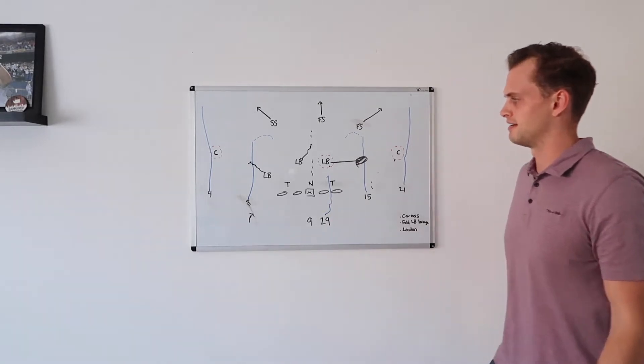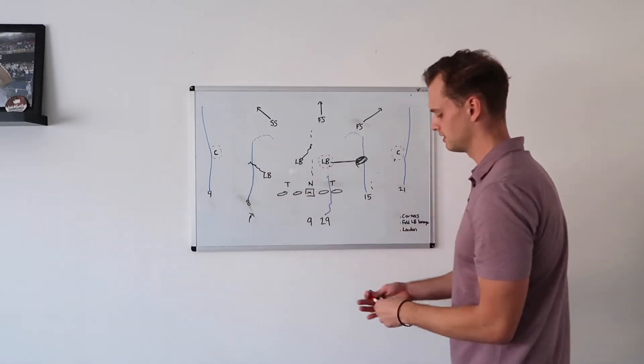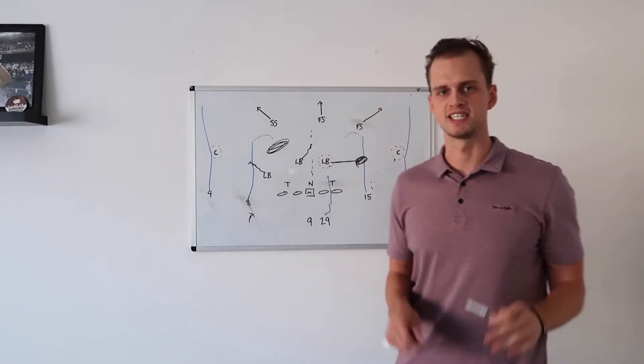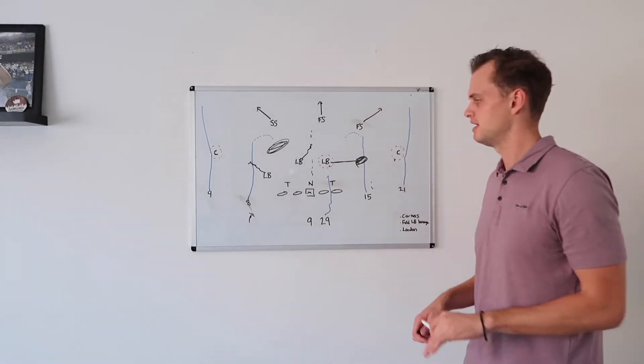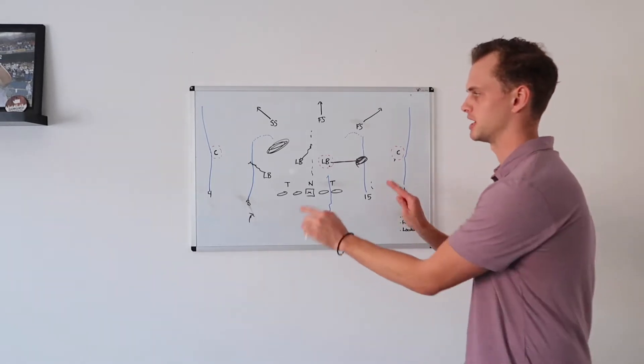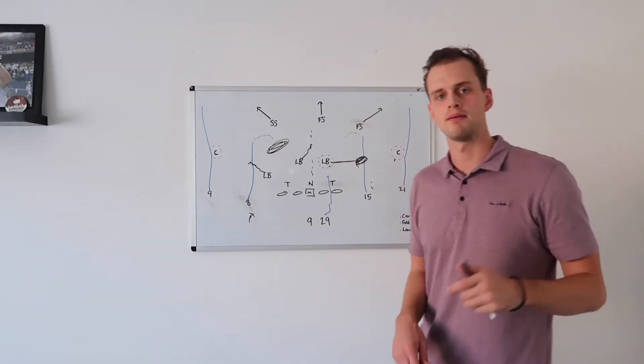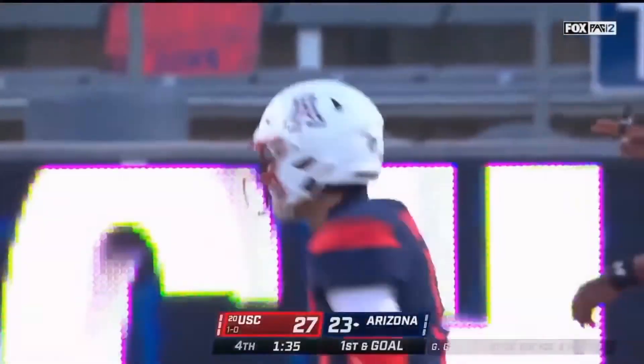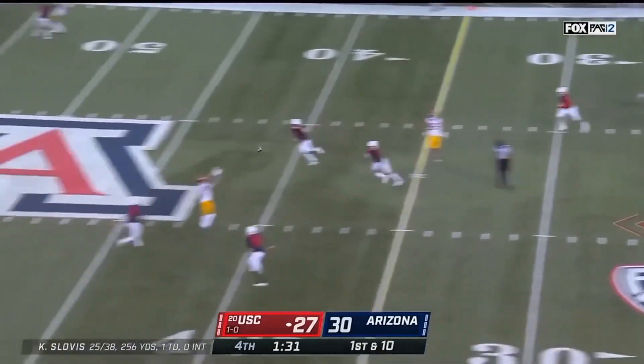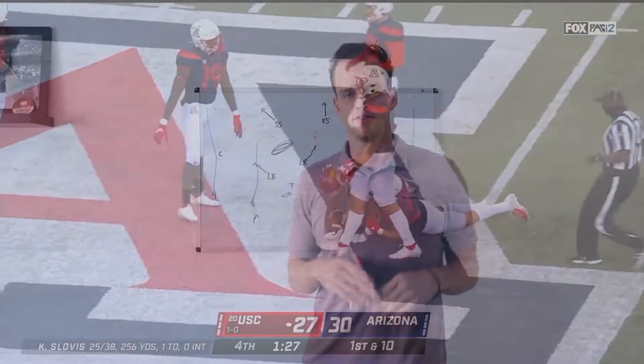Doesn't happen that way. Slovis selects to go to the left side of the field. They find a nice window right here for Amon Ra St. Brown. It's a big chunk play. Fantastic way to start the drive. Love the call for verts because it gives yourself a ton of options. That's all you can ask for as a quarterback is to have answers. With all that in mind, let's watch the big first down pick up one more time. There was the first play of the drive.